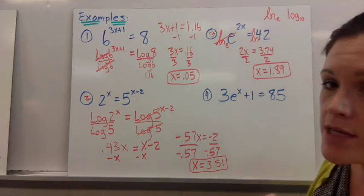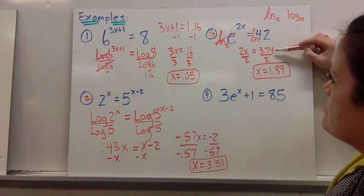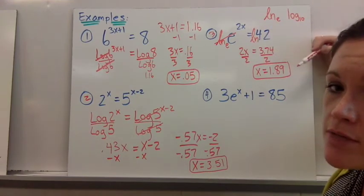And then after that your exponent comes out you have your decimal from your calculator and then you just divide it by 2.